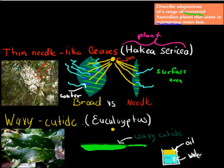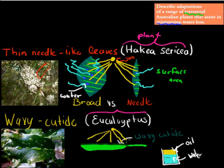The second example is the waxy cuticle. One plant that has this and is easy to remember is the eucalyptus tree. If water is inside the plant, it could usually evaporate through the leaf because the leaf is warmed up by sun rays — that is obviously water loss.